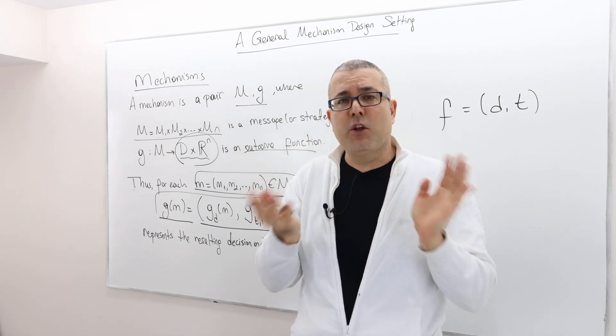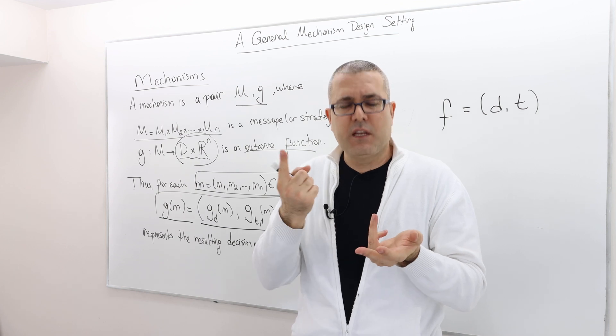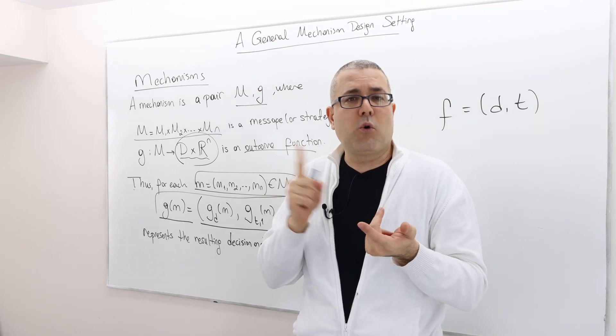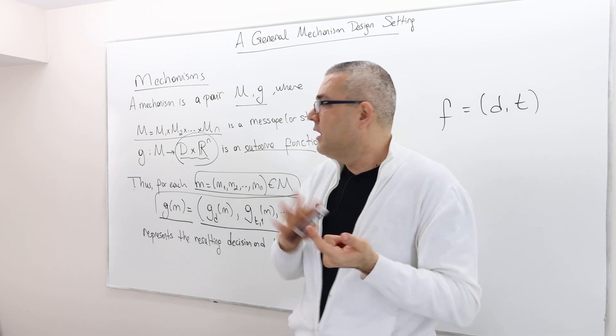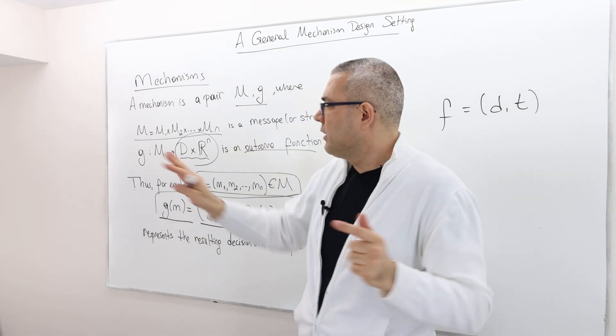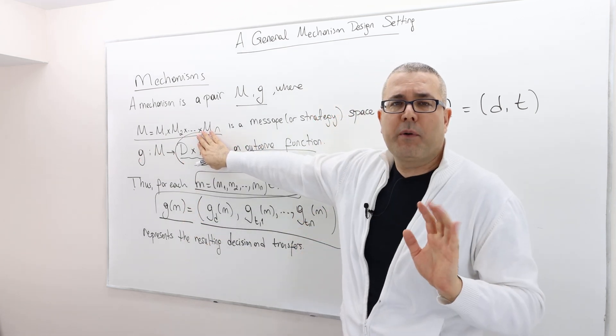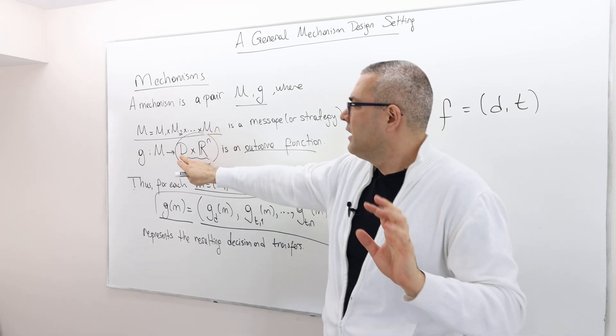In some examples, there's going to be no transfer, like voting games, the matching problem, or the example which power plants to build, there was no transfer whatsoever. So there's no R to the power N. And in those examples, there's only D.